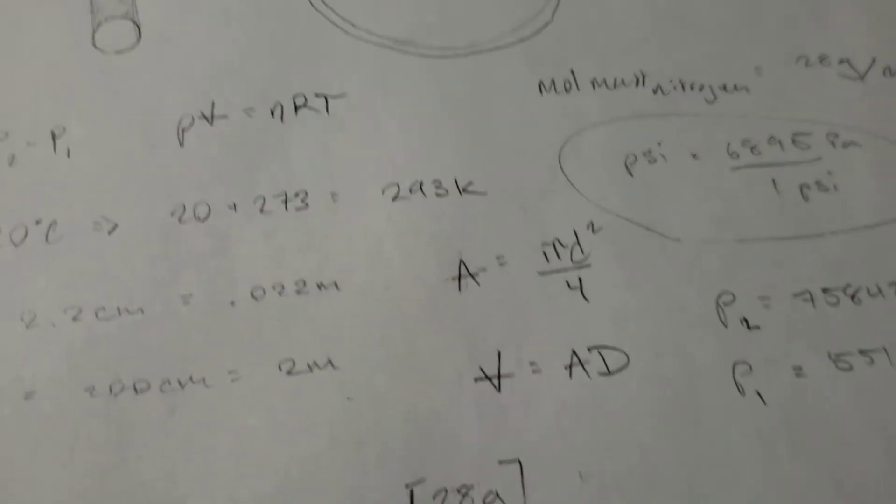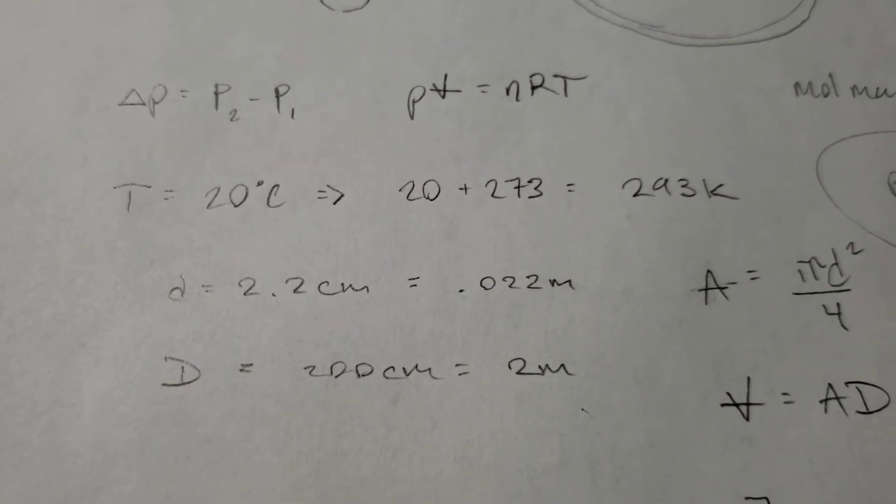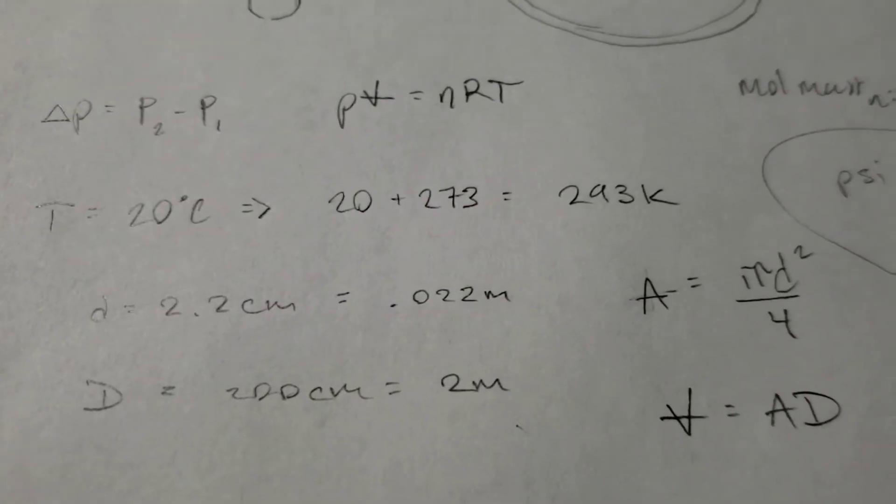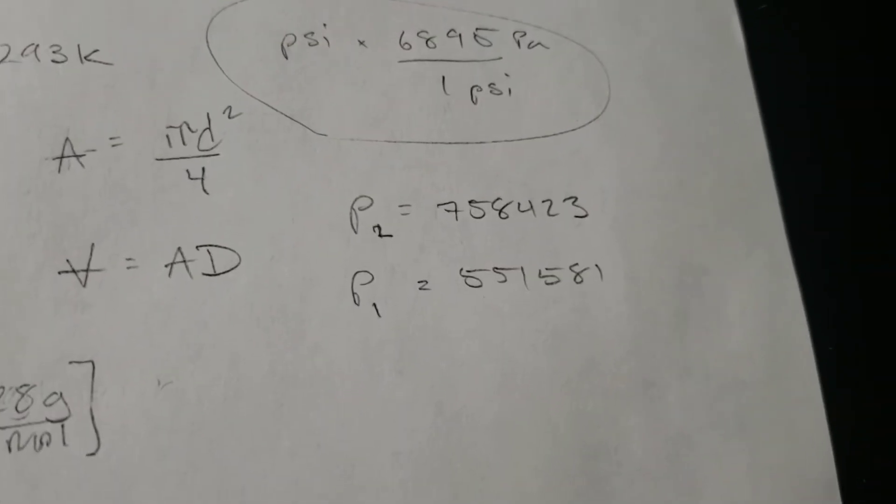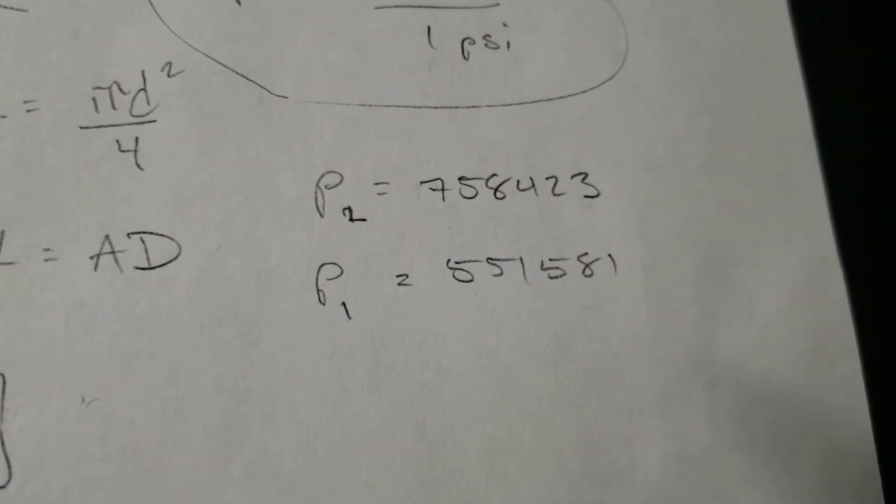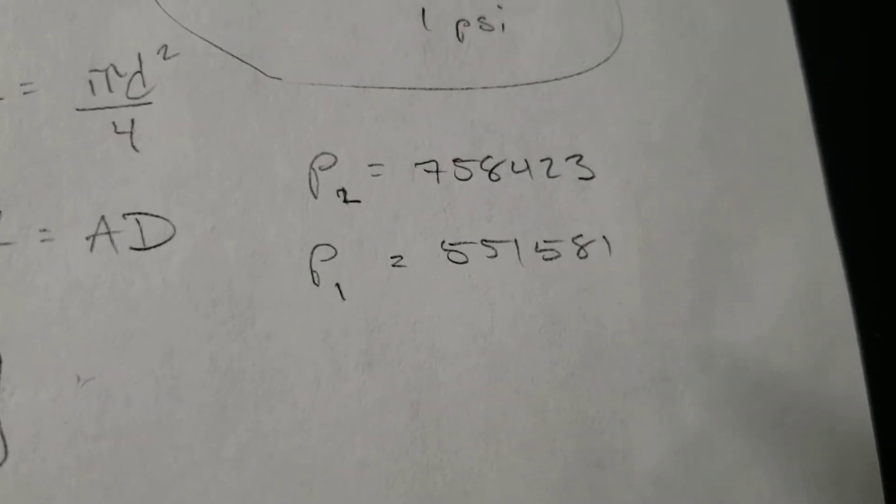And that diameter is going to be 2.2 centimeters or 0.022 meters. So, similarly, I converted all the other quantities to SI units. So, the temperature that was given, 20 degrees Celsius, is equal to 293 Kelvin. And I converted the psi into pascals. So, 110 would be equal to P2 over here and then 80 would be equal to P1 as shown.